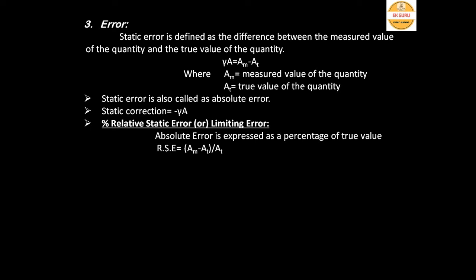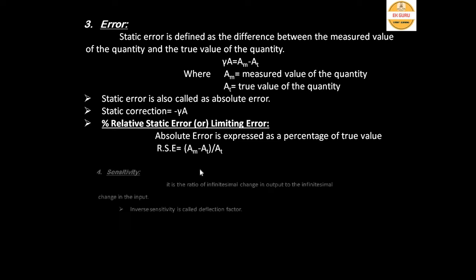When purchasing an instrument, the manufacturer provides the limiting error — that is the guaranteed error — expressed in terms of limiting error or as absolute or relative static error. The relative static error is equal to (Am − At) / At, meaning the static error expressed as a proportion of the true value.